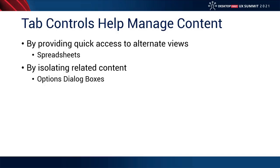The next real strength of tab controls in managing content is by isolating related content. The classic example is options dialog boxes. They've been around for many, many years. Sometimes it works really well; other times, forcing that tab metaphor can actually be problematic, which is really what this session is all about. Tabs work well in certain cases, but if we go too far or try to bend the rules, we can make life more challenging for our users.